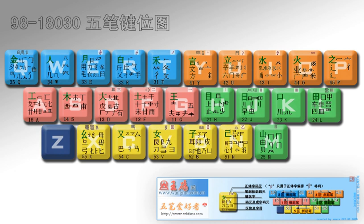In phonetic-based input, the user enters pronunciations that are converted into relevant Chinese characters. The user must select the desired character from homophones, which are common in Chinese. Modern systems, such as Sogou Pinyin and Google Pinyin, predict the desired characters based on context and user preferences. For example, if one enters the sounds 'Jicheng', the software will type 'Jicheng' meaning to inherit, but if 'Jichengche' is entered, 'Jichengche' meaning taxi will appear.